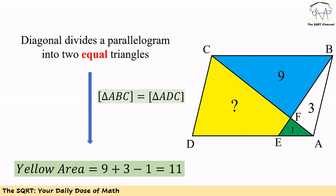We now know the area of the green triangle is 1, the area of the white triangle is 3, and the area of the blue triangle is 9. Since AC is a diagonal, it divides ABCD into two equal areas. The area of triangle ABC equals 9 + 3 = 12, so the area of triangle ACD is also 12. Subtracting the green triangle area of 1, the yellow area equals 12 minus 1, which is 11. That's our answer.